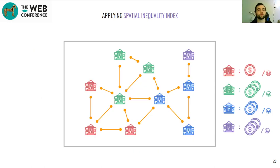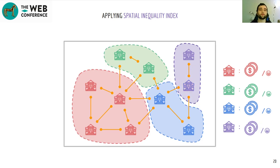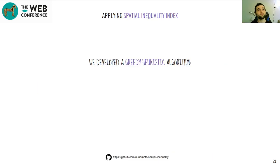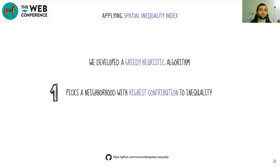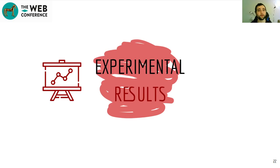Now that we can measure inequality this way, we want to minimize it. Thinking of this as a graph partitioning problem — where nodes are schools and edges represent their neighborhoods — we need to find the optimal partition scheme to minimize inequality. However, this problem is NP-complete. We developed a greedy heuristic algorithm that, starting from the current district assignment, iteratively picks the neighborhood with the highest contribution towards inequality and greedily redistricts schools to mitigate funding imbalances among neighbors, repeating until done. The code is fully available on OpenStars and GitHub.